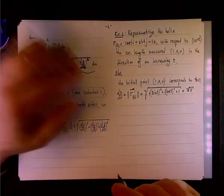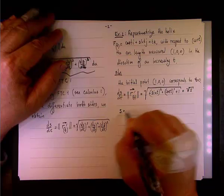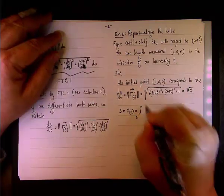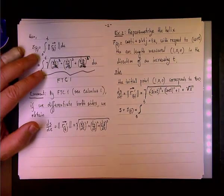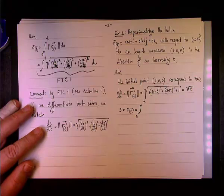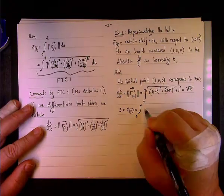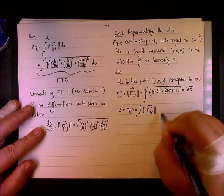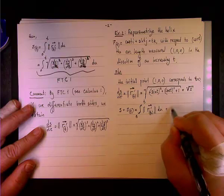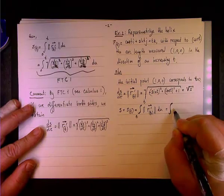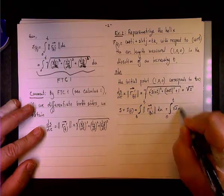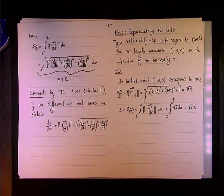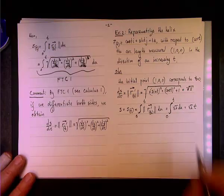That equals square root of 2. So what is s? s becomes s(t), and we integrate from 0 to t, applying the definition of the arc length function. It will be the integral of the magnitude of r prime of u du, and in this case that's simply the integral from 0 to t of square root of 2 du, which gives us square root of 2 times t.